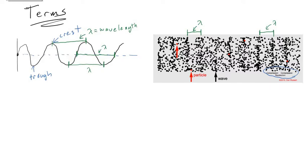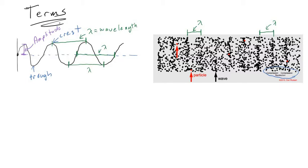Finally, I want to talk about the term amplitude. Amplitude is the distance that the wave travels from equilibrium — the maximum displacement of the wave — and is abbreviated by a capital A. We could measure it to a crest or to a trough. For a longitudinal wave, the source was moving back and forth, and the distance that this source moves is what we call the amplitude.